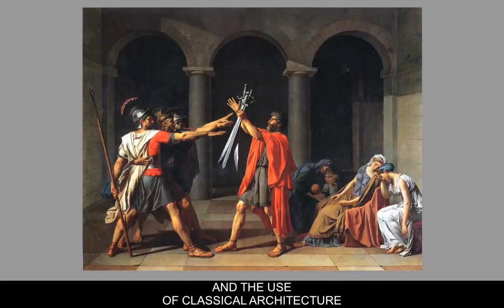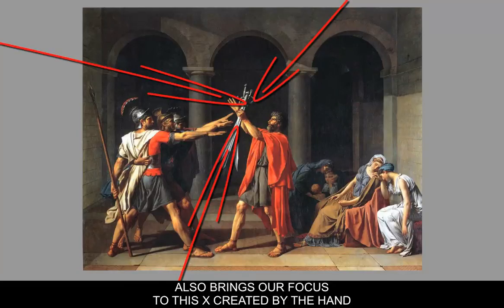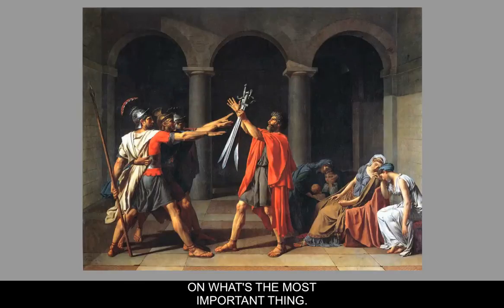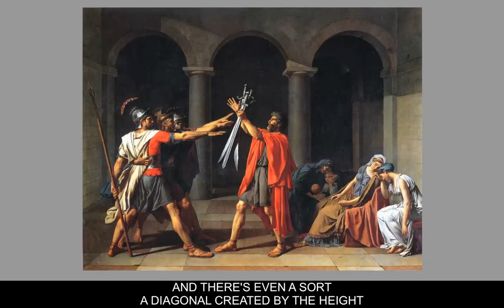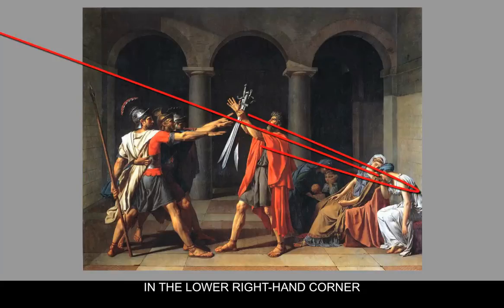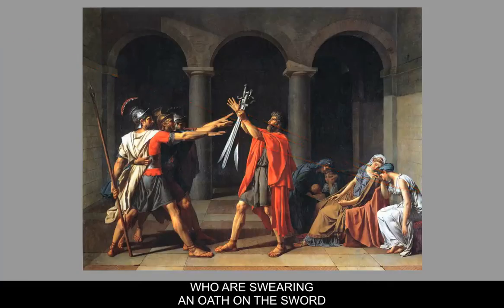The use of classical architecture reinforces this as well. The perspective on the column tops and masonry on the walls brings our focus to the X created by the hand and the swords in the center of the picture, focusing your attention on what's most important. There's also a diagonal created by the height of the figures flowing down into the women in the lower right-hand corner, as if you're moving from the three men swearing an oath down into the women in the background.